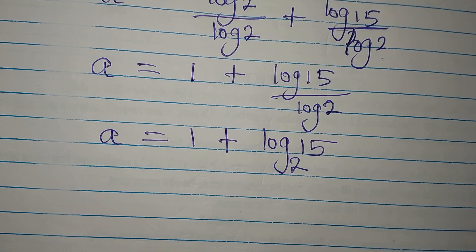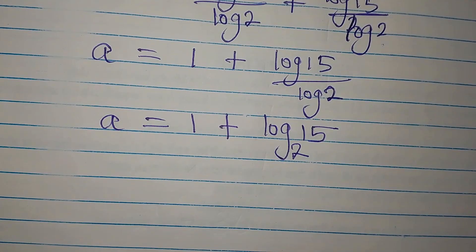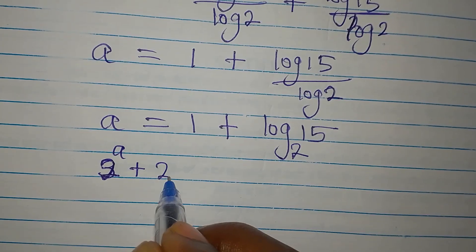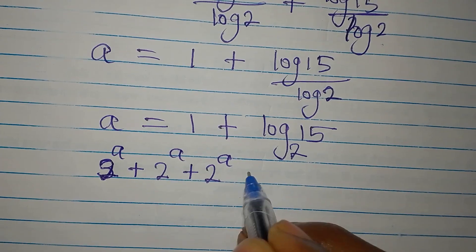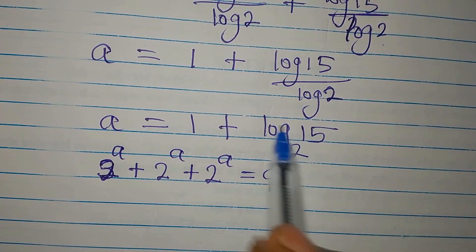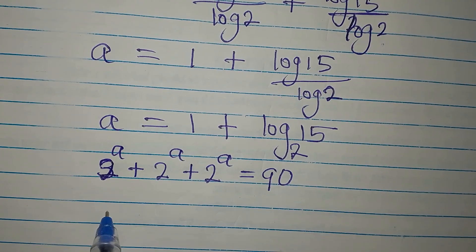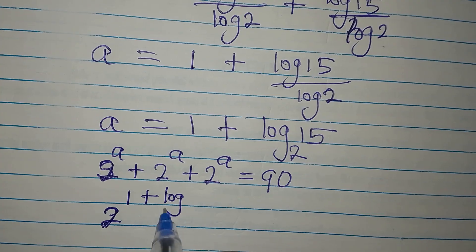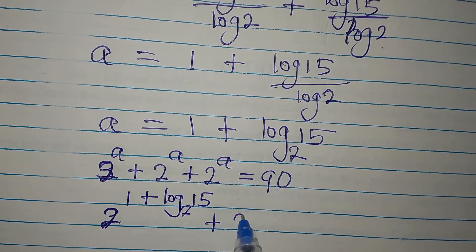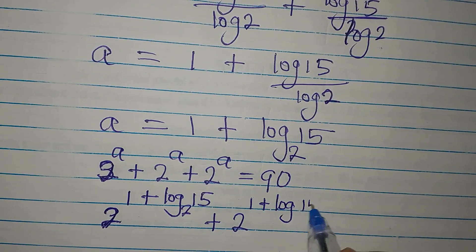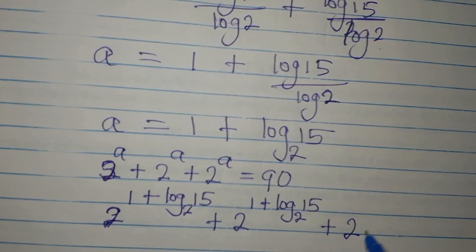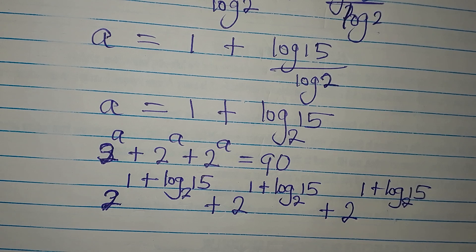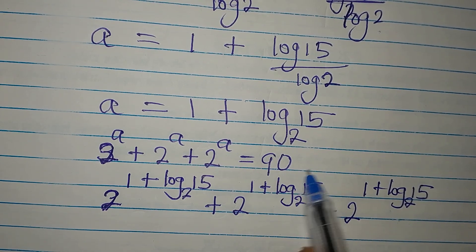We always verify our answer. The equation is 2 to the power of a plus 2 to the power of a plus 2 to the power of a equals 90. Substituting a = 1 + log₂(15), each term becomes 2 to the power of (1 + log₂15). If this gives 90, our answer is confirmed.